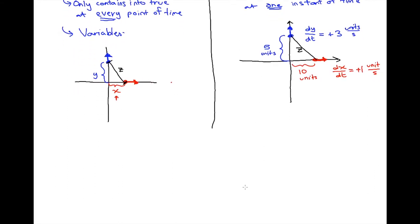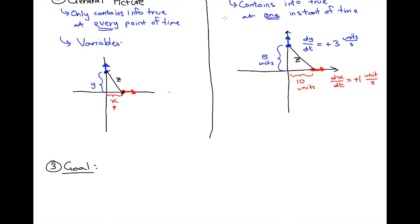Our third step is going to be to quickly state a goal. I like to state a quick goal at the beginning of these problems because, just like with optimization, it helps make sure we know we're solving for exactly what the problem is asking. In this case, we're being asked to find how the distance between the two dots is changing. Looking at our picture, we want to find dz/dt — but not just dz/dt in general. We want to find dz/dt specifically at the instant when x equals 10 and y equals 5.